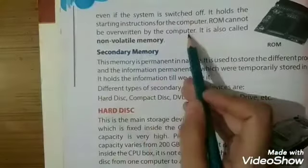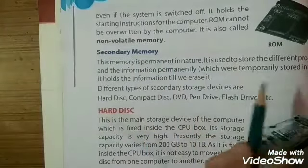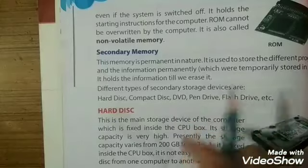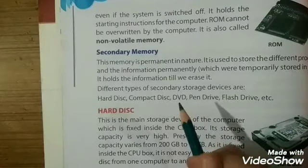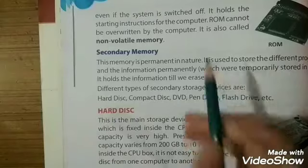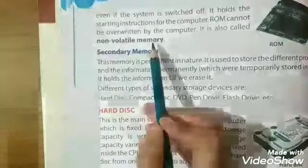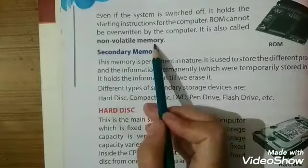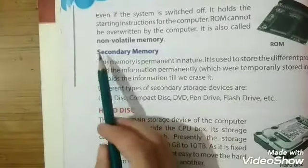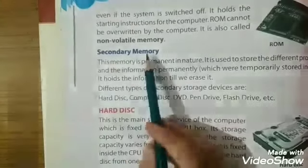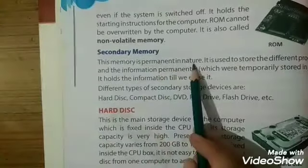ROM cannot be overwritten by the computer. We also call it non-volatile memory. Now the second memory is secondary memory — this memory is permanent in nature.